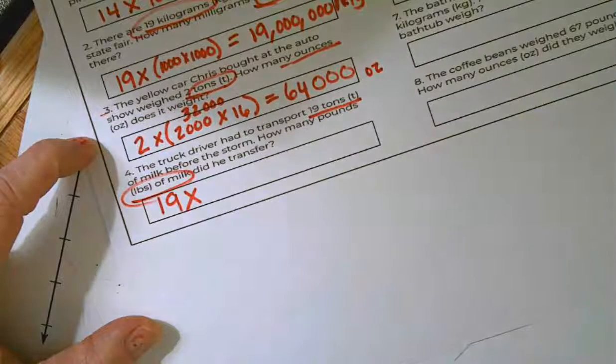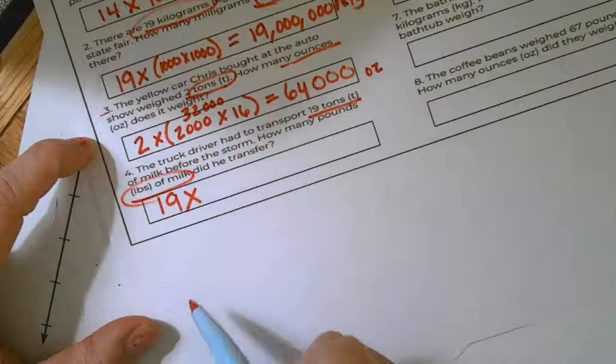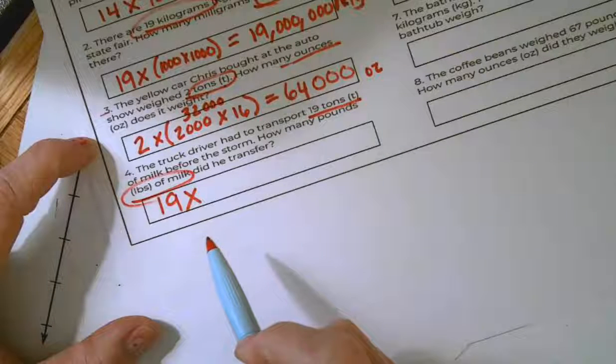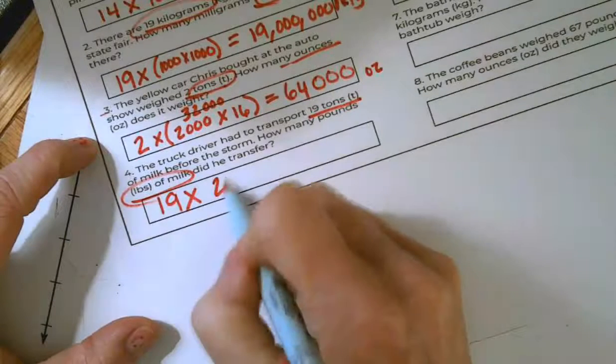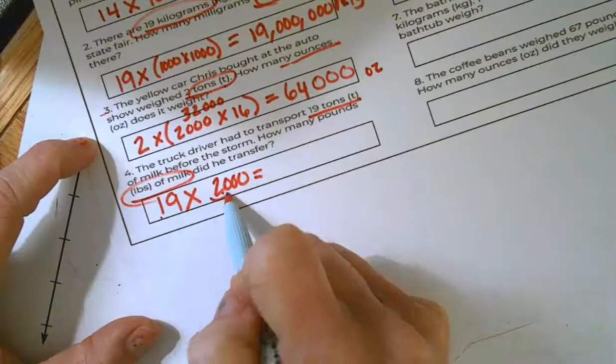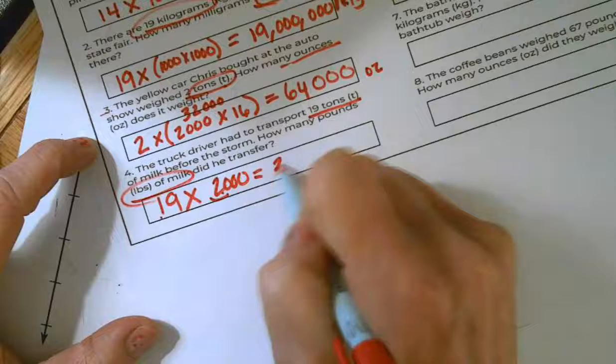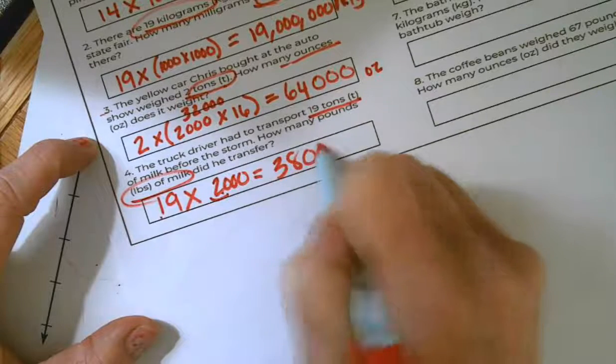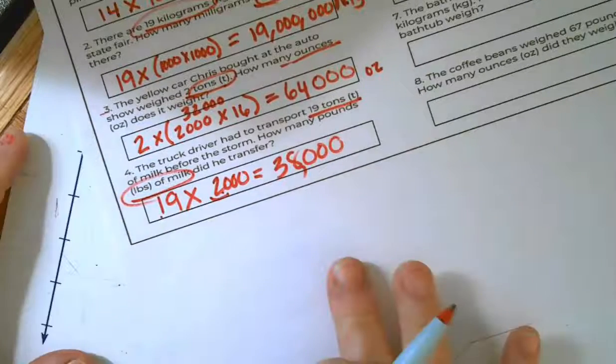There are 2,000 pounds in a ton. I'm multiplying by 2,000. And so I know that 19 times 2 is 38. And I'm going to annex my three zeros. It's 38,000 pounds.